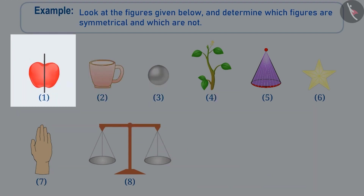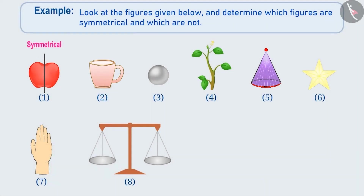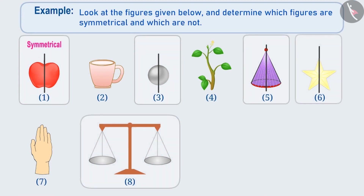We can make two parts of the first figure like this. Here, we see that the right half and the left half are identical to each other — they look exactly alike — and thus, it is a symmetrical figure. For the other figure, there is no way to divide it into two parts which would be exact reflections of each other. Thus, the second figure is not a symmetrical figure. Similarly, figures 1, 3, 5, 6 and 8 are also symmetrical figures, while figures 2, 4 and 7 are not symmetrical figures.